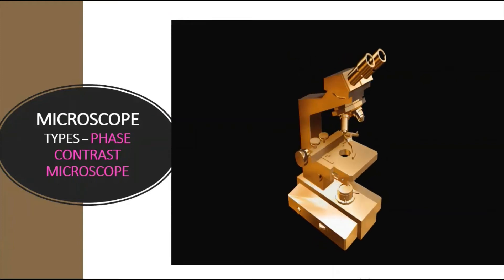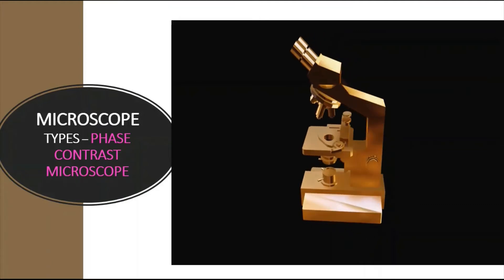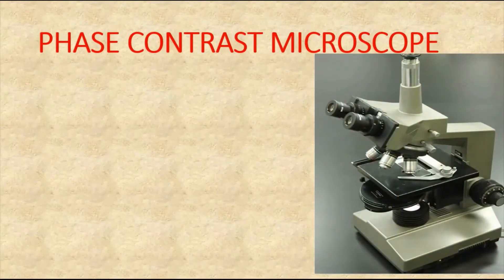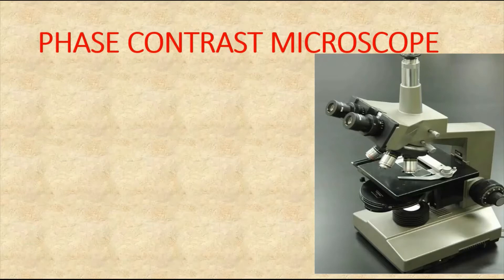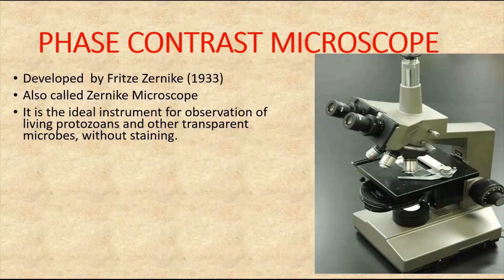We are going to learn about the phase contrast microscope, which is one type of microscope. The phase contrast microscope is a special microscope that enables the viewer to see transparent protoplasmic components without staining and without killing. It was originally developed by Frits Zernike in the year 1933, and hence we also call this the Zernike microscope. For this, he was awarded the Nobel Prize in Physics in the year 1953, for the discovery of the phase contrast principle.